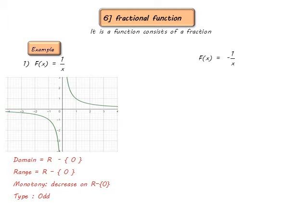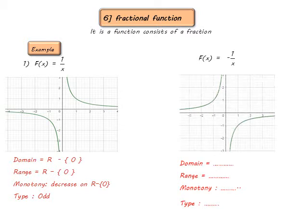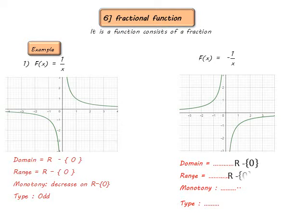For f(x) = -1/x, the function will be drawn in the second and fourth quadrants. The domain equals ℝ except 0, and the range equals ℝ except 0. The function increases on ℝ except 0, and the function is an odd function.